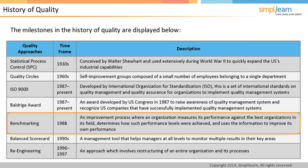In 1988, benchmarking was developed as a quality approach, where an organization measures its performance against the best organizations in its field and uses the information to improve itself. In the 1990s, there was the Balanced Scorecard approach — a management tool that helps managers monitor results across key areas so that one metric is not optimized while another is ignored. During 1996 through 1997, reengineering was developed, involving the restructuring of an entire organization and its processes, such as integrating functional tasks into cross-functional processes.